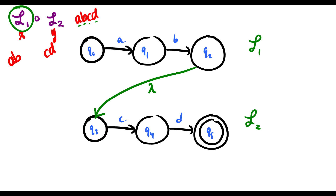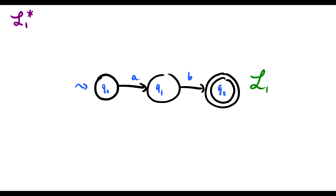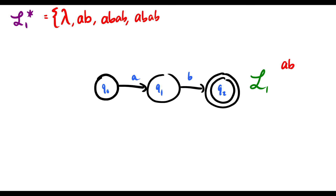Don't worry, we'll see an example where we put all of these together at the end. Now, star — star is the most complicated. L1 accepts AB, so what is L1 star going to accept? It's going to accept the empty string. It's going to accept one string of AB. It's going to accept two strings of AB — so AB AB. It'll accept AB AB AB — multiples of AB.